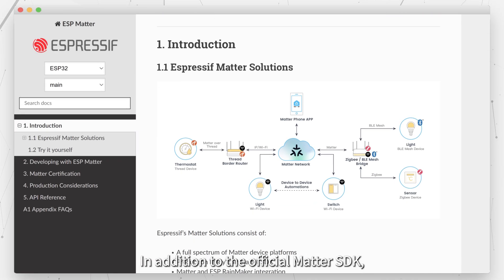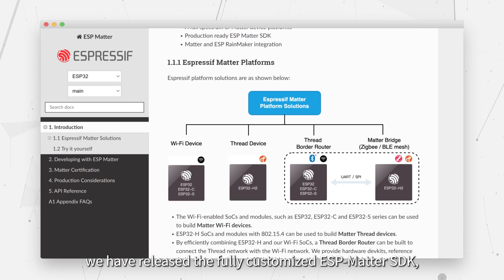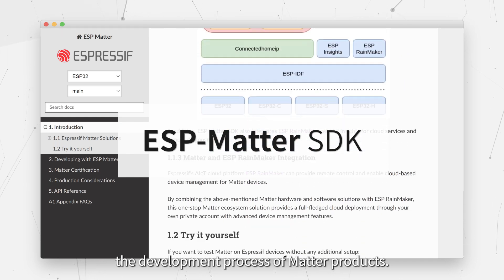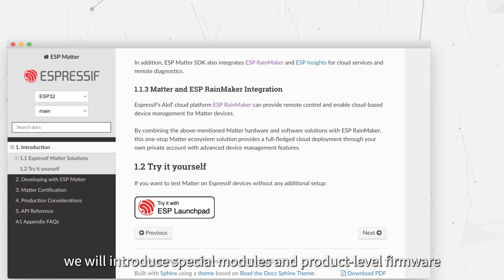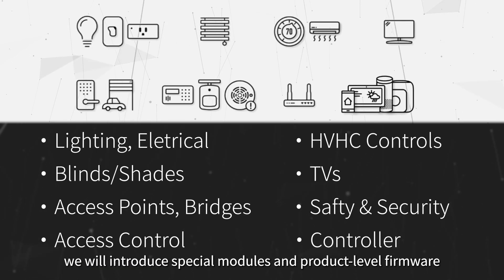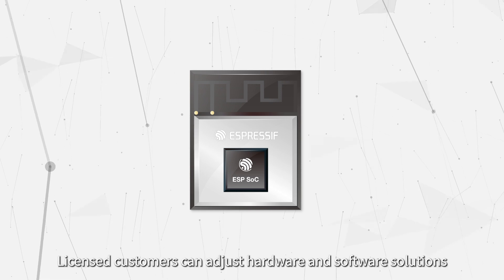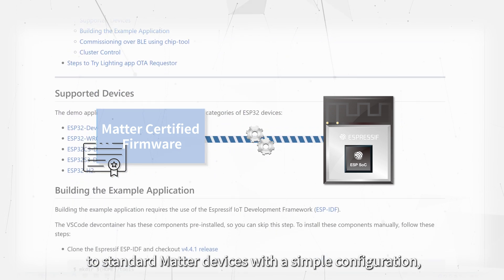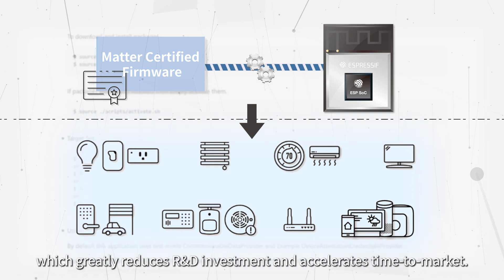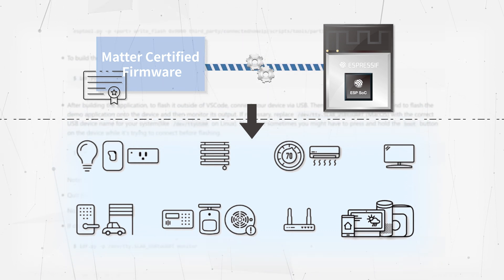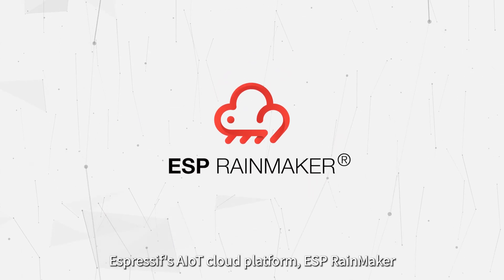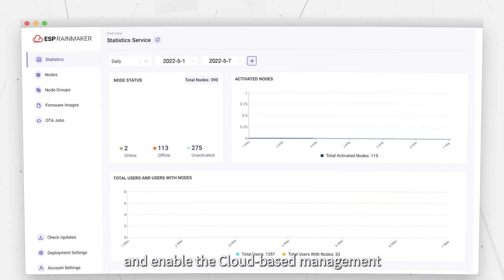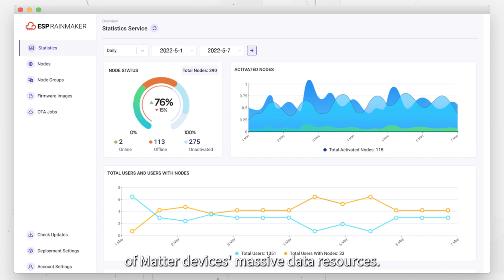In addition to the official Matter SDK, we have released the fully customized ESP Matter SDK, which further simplifies and accelerates the development process of Matter products. On top of this, we will introduce special modules and product-level firmware for standard Matter devices. Licensed customers can adjust hardware and software solutions to standard Matter devices with a simple configuration, which greatly reduces R&D investment and accelerates time to market.